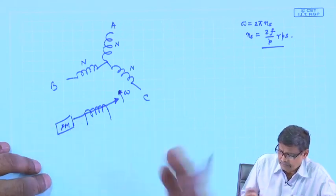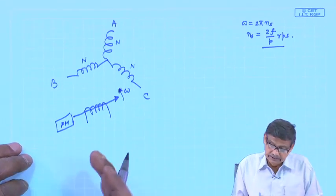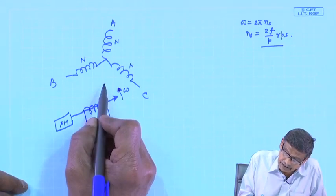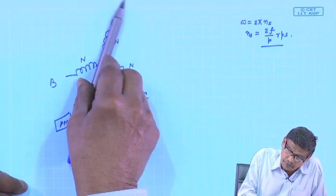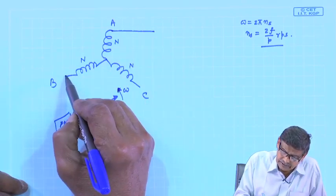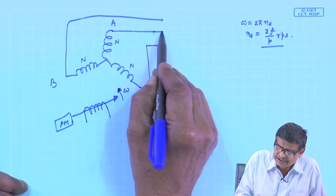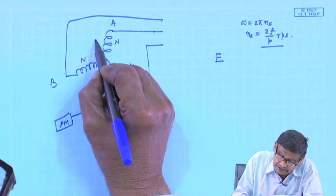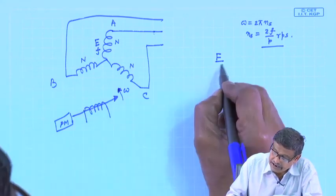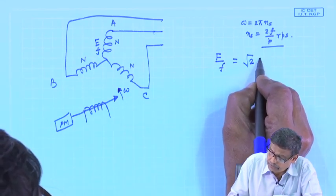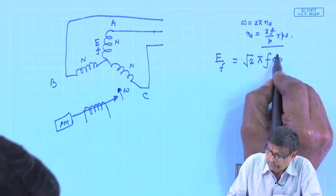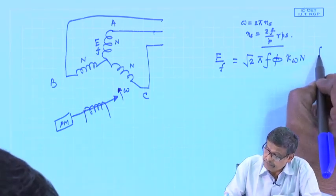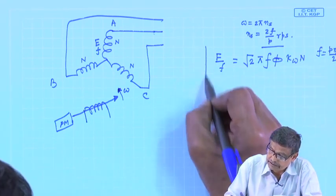This flux will be moving. Let us assume nothing is connected here — I want to examine what will be the induced voltage. The induced voltage per phase, which I call E_F, will be: root 2 × π × F × flux per pole × kW × N. This voltage is at frequency F = P × Ns / 2. This expression was obtained by assuming the B distribution is sinusoidal, produced by the distributed coil if we neglect harmonics.